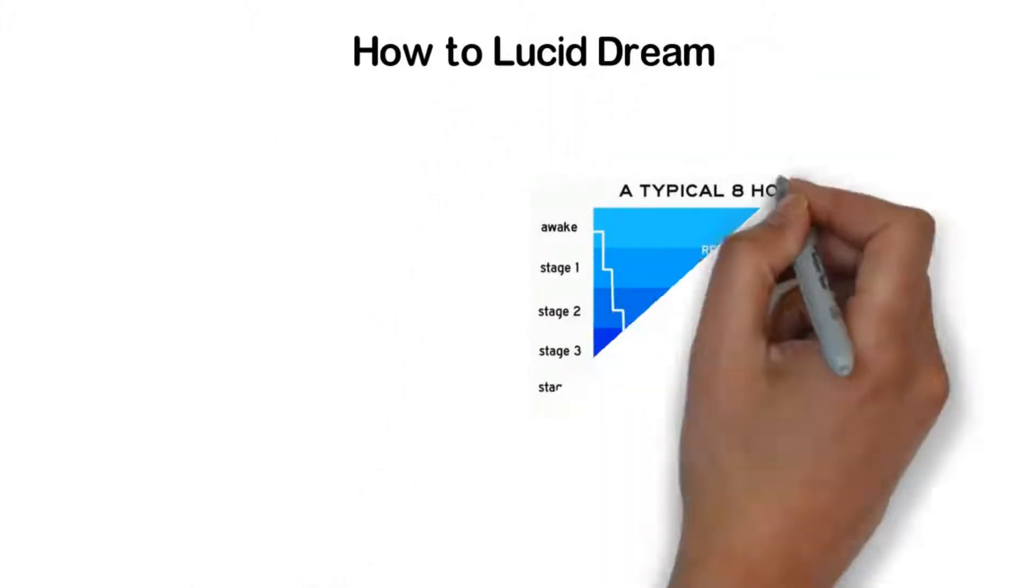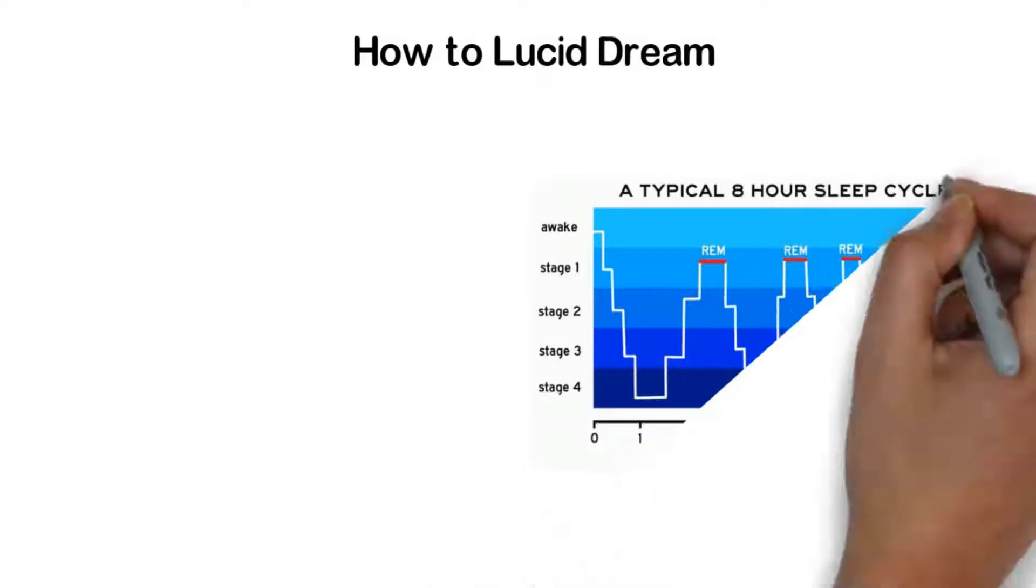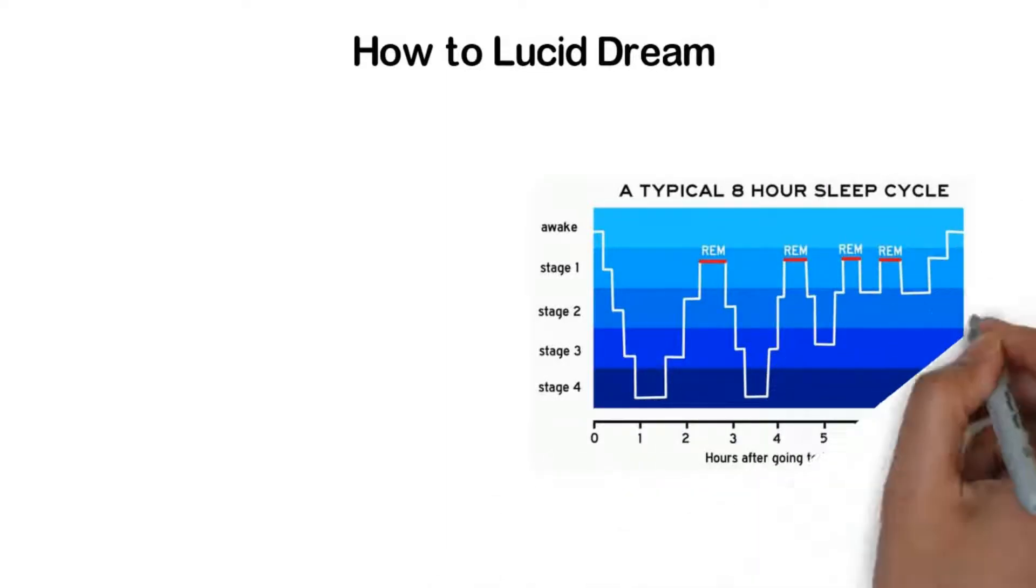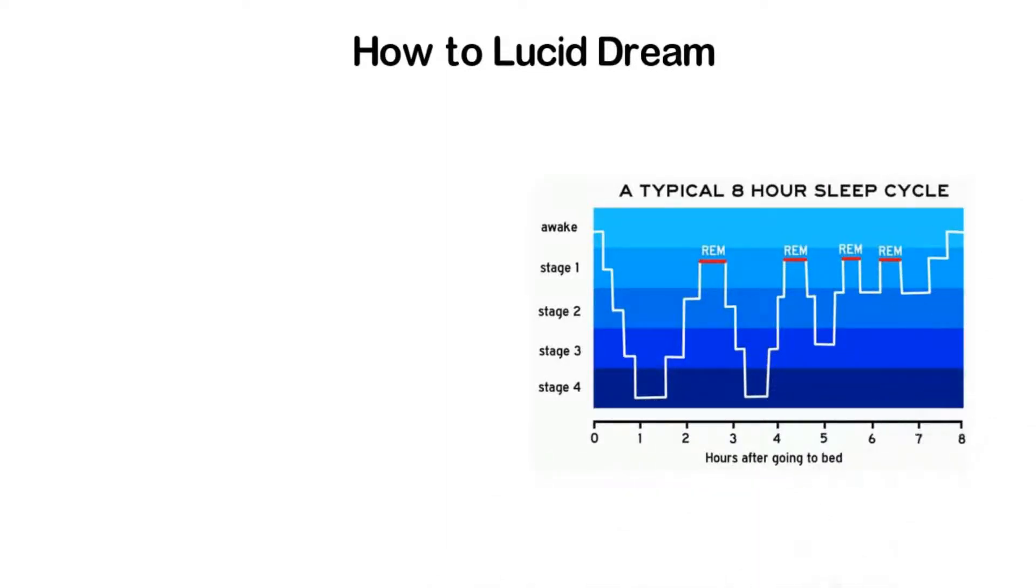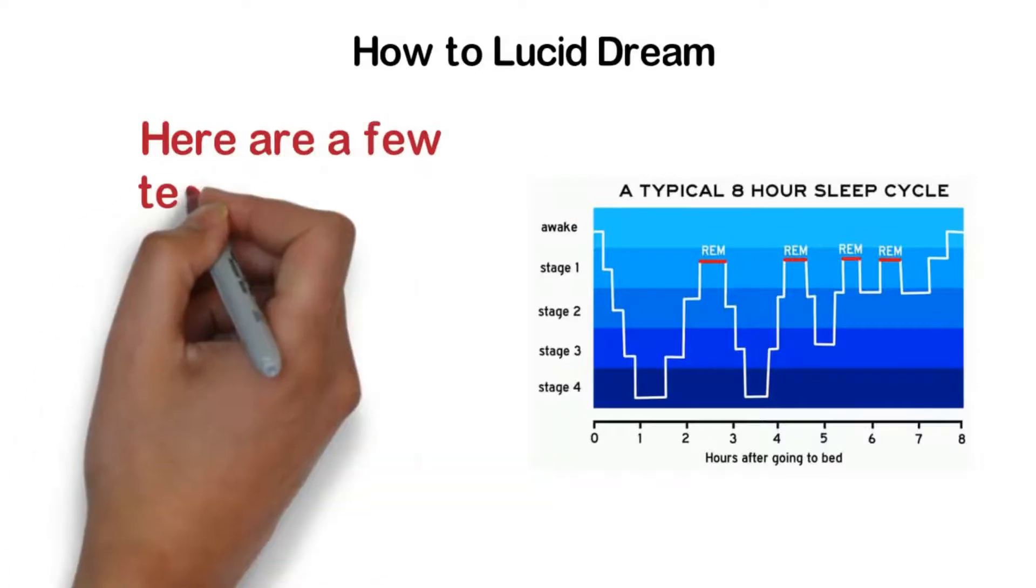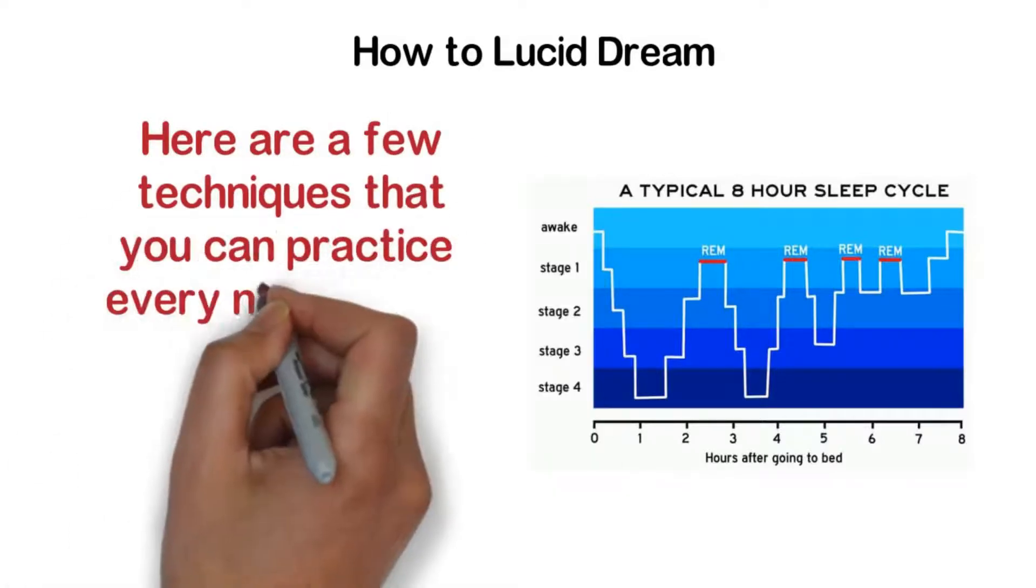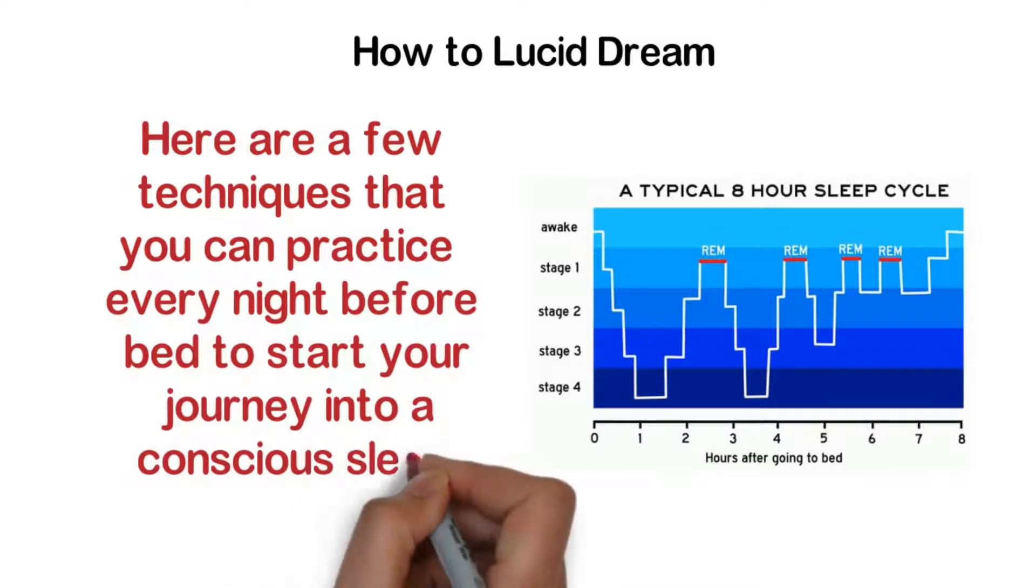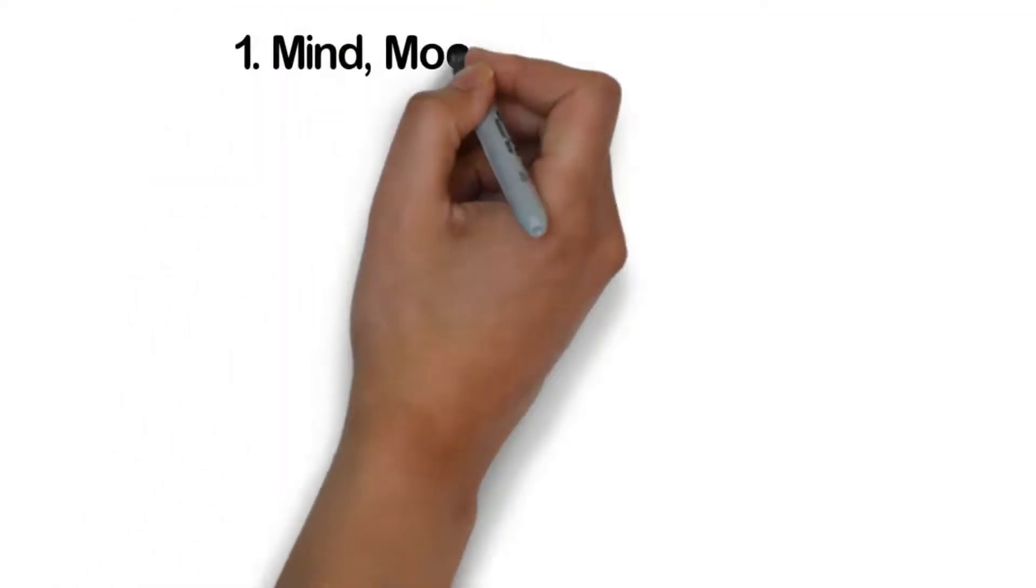How to lucid dream. Lucid dreaming generally occurs during the REM stage of sleep. Learning how to lucid dream involves training your mind to notice and regain your consciousness even as you enter the REM phase of sleep. Here are a few techniques that you can practice every night before bed to start your journey into a conscious sleep.